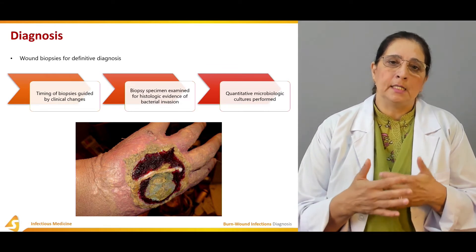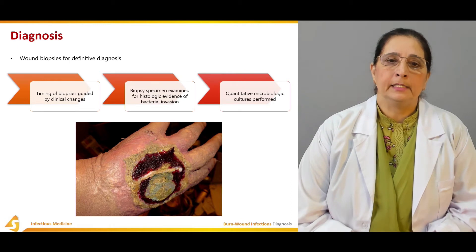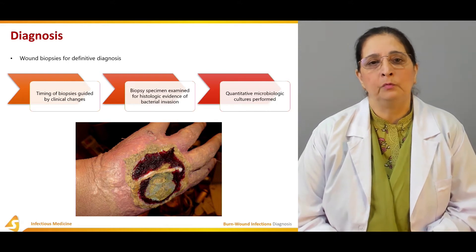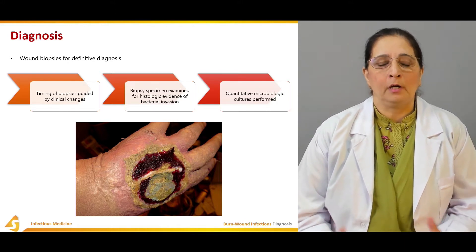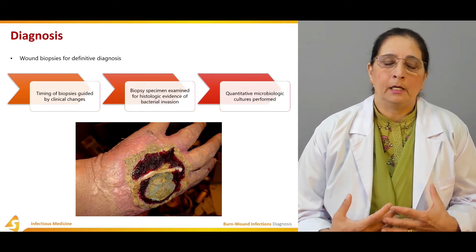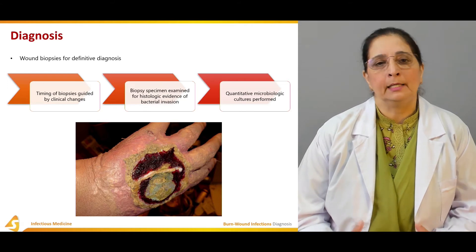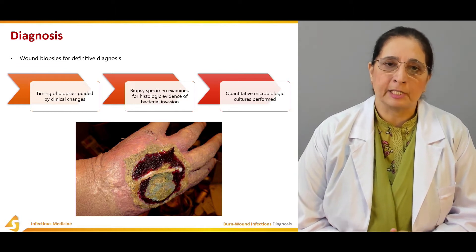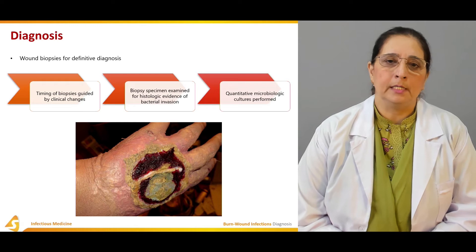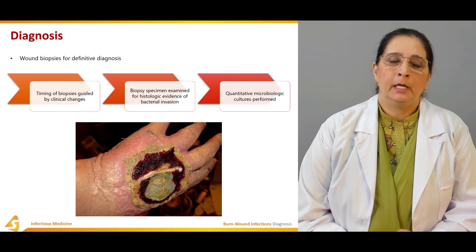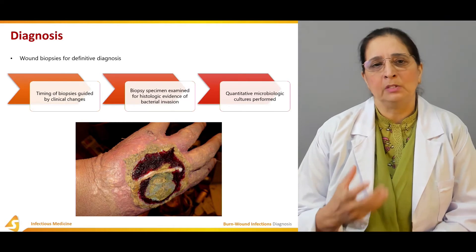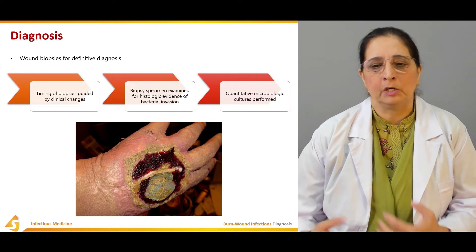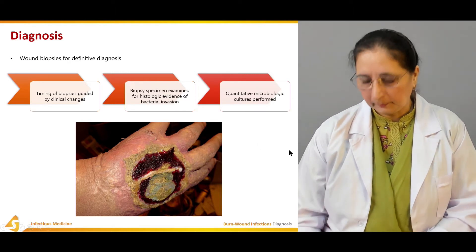As already discussed in the pathophysiology, the immune system is impaired in patients with burn injuries. Microorganisms that are usually not very pathogenic can attack the body as a result of the impaired immune response, causing infections. Because multiple different microorganisms can attack, it is sometimes hard to identify a single causative organism on culture, but we can always attempt to do so.